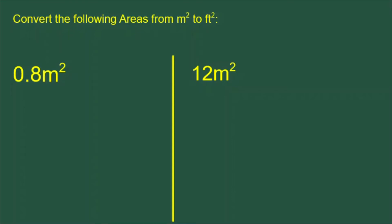Today's Daily Dose of Math is about how to convert areas from meters squared to feet squared. We have two examples: 0.8 meters squared and 12 meters squared. We want to convert each of them into feet squared.